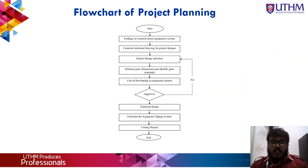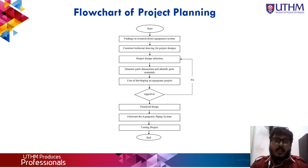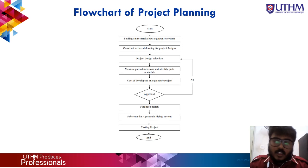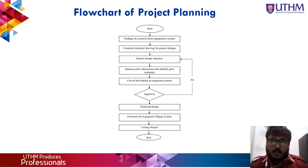This is the project flowchart for PSM2 planning. First, start, then find research about the system. Second, construct the technical drawing for the project design. Third, project design selection, then measure part dimensions, identify parts and materials cost for developing the aquaponics project. Then get approval from the supervisor, finalize, fabricate the complete system, then test the project, and that is the end.